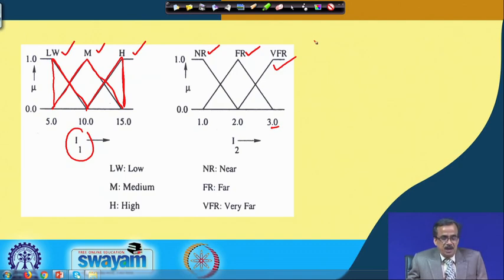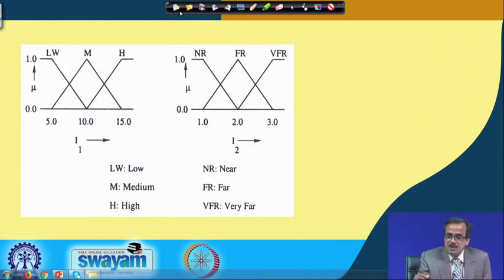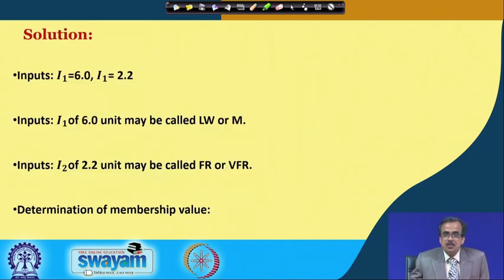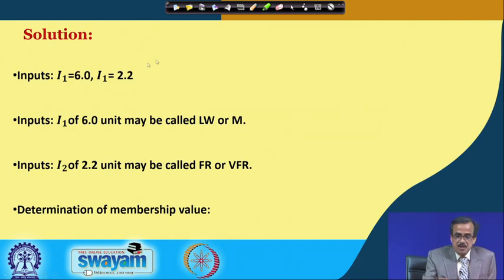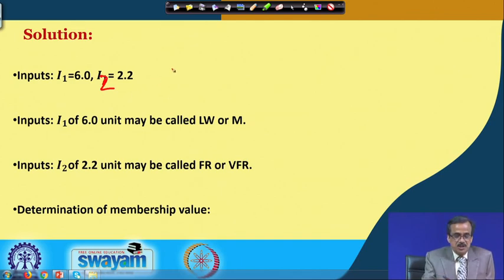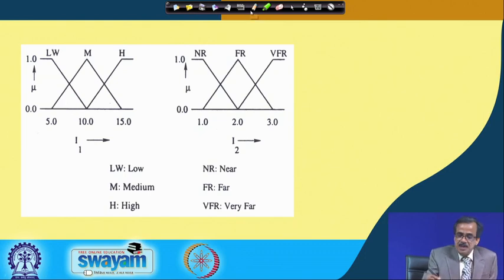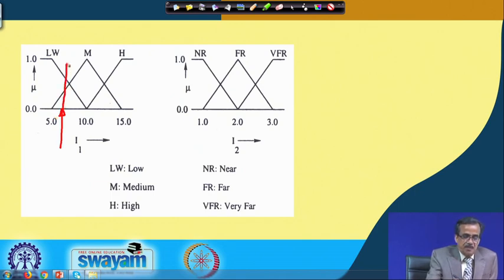With input variables i1 and i2 represented through their linguistic terms, we can find the output for the given inputs. For i1=6.0, this point lies in the overlap of low and medium. It can be called medium with some membership value mu_medium, and low with another membership value mu_low.